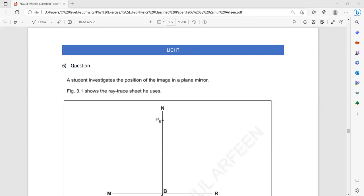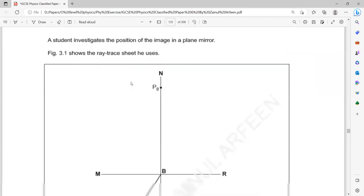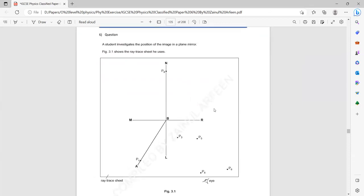A student investigates the position of the image in a plane mirror. Figure 3.1 shows the ray trace sheet he uses. You can see this is what the student ray trace sheet looks like.